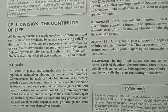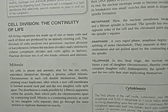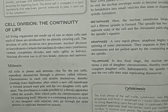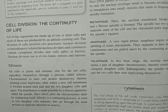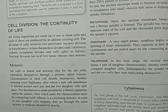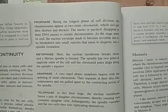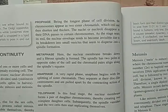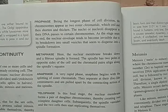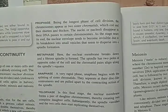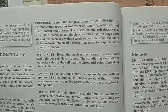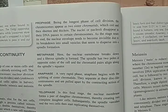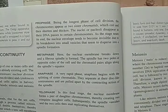In interphase, chromosome material is in the form of very loosely coiled threads called chromatin. Just before mitosis starts, the DNA of each chromosome replicates itself. Next is prophase, which is the longest phase of cell division. The chromosomes appear as two sister chromatids, which coil, shorten, and thicken. The nucleolus disappears as its DNA passes to certain chromosomes, and the nuclear envelope breaks down into small vesicles that disperse into the spindle formation.